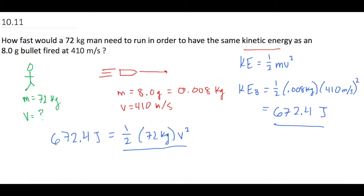So if we divide both sides of the equation by 1 half 72 kg, that cancels. 1 half 72 kg gives us 18.678. But that is equal to v squared, remember. So now we need to square root that. So square root that answer.